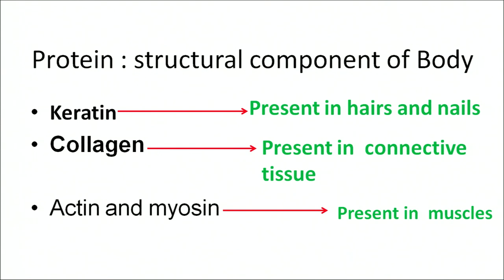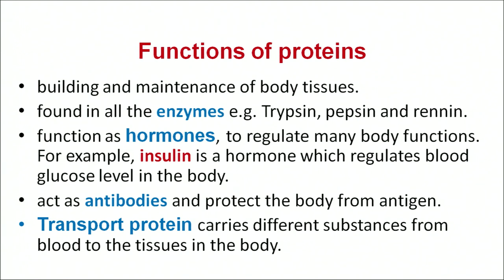Protein — the structural component of the body. Keratin is found in hairs and nails. Collagen is found in connective tissues. Actin and myosin are present in muscles. Functions of protein: the major function is building and maintenance of body tissues. Proteins are found in all enzymes like trypsin, pepsin and renin. They also function as hormones and regulate body functioning — for example, insulin is a protein that regulates blood glucose levels. They act as antibodies and protect our body from various infections. Transport proteins carry important substances from the blood to the tissues in the body.